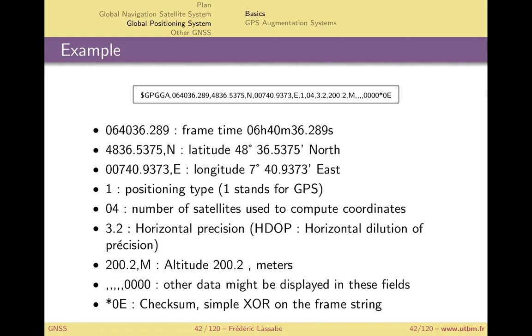Then the four next fields define the location, the coordinates. These both fields define the latitude which is 48 degrees 36.5375 minutes north. The N is for north.